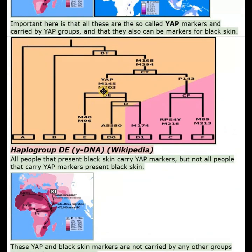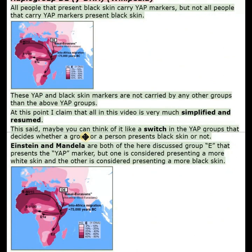At this point I claim that all in this video is very much simplified and resumed. This said, maybe you can think of it like a switch in the YAP groups that decides whether a group or a person presents black skin or not. Einstein and Mandela are both of the here discussed haplogroup E that presents the YAP marker, but one is considered presenting a more white skin and the other is considered presenting a more black skin.